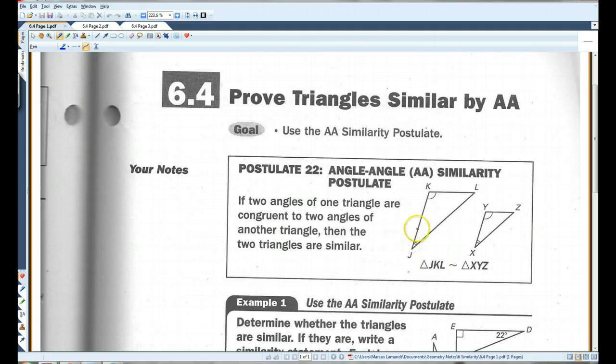So you don't have to prove that all three angles are congruent and all three sides are proportional. If you've got two angles that are congruent, you're good.